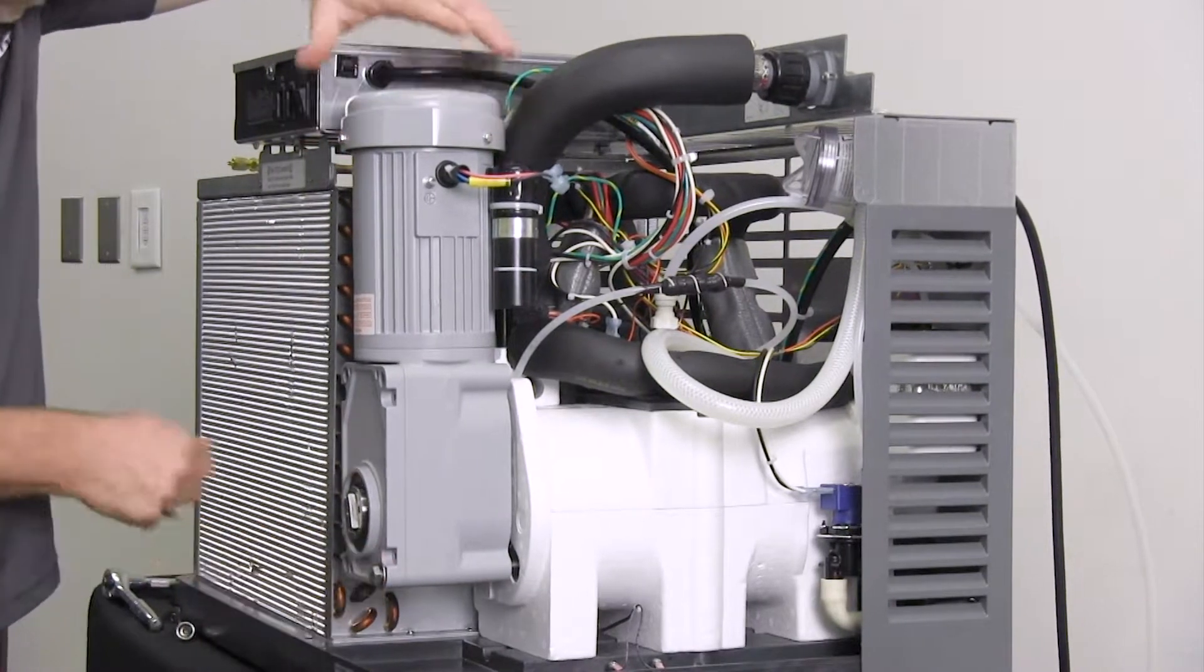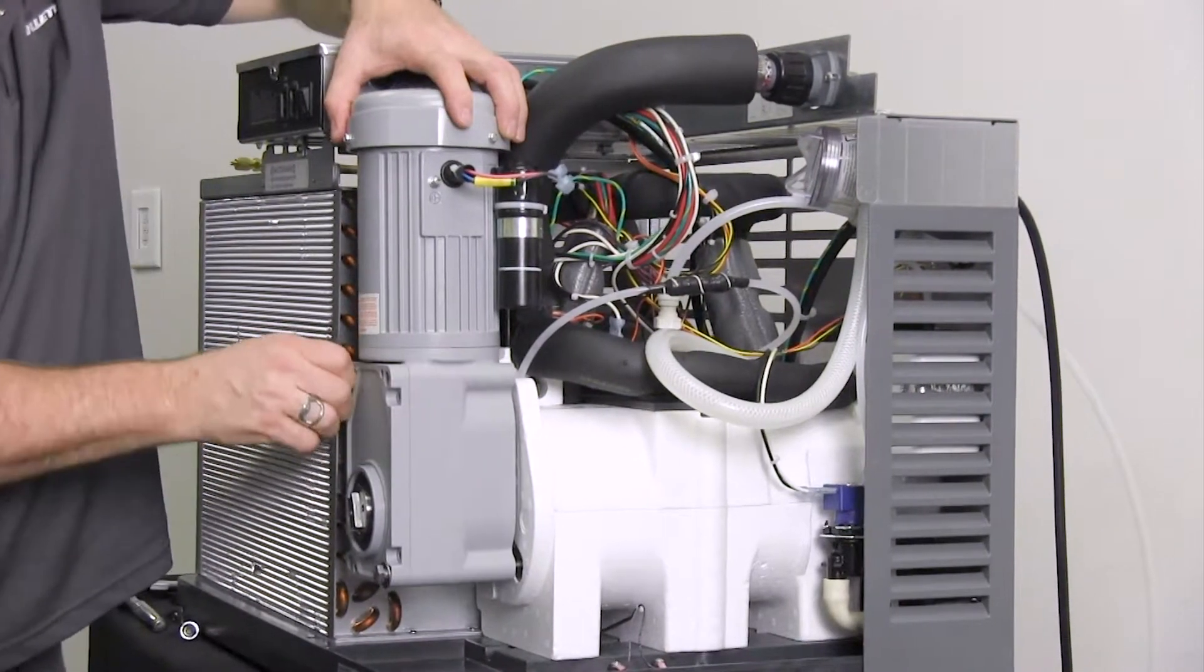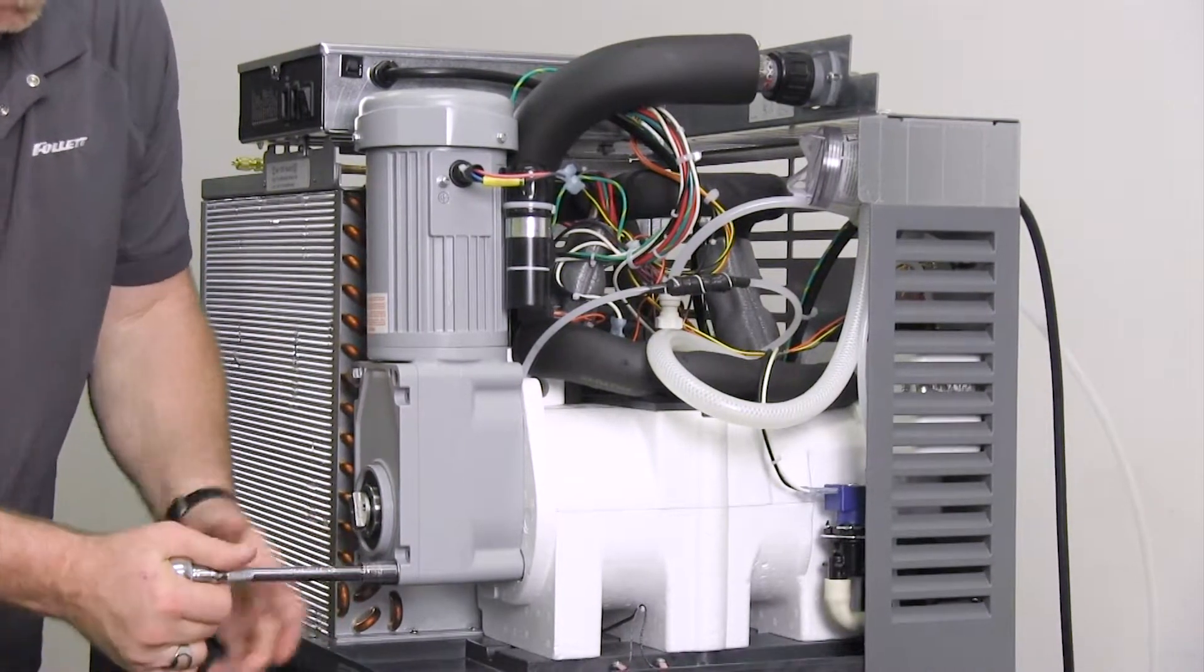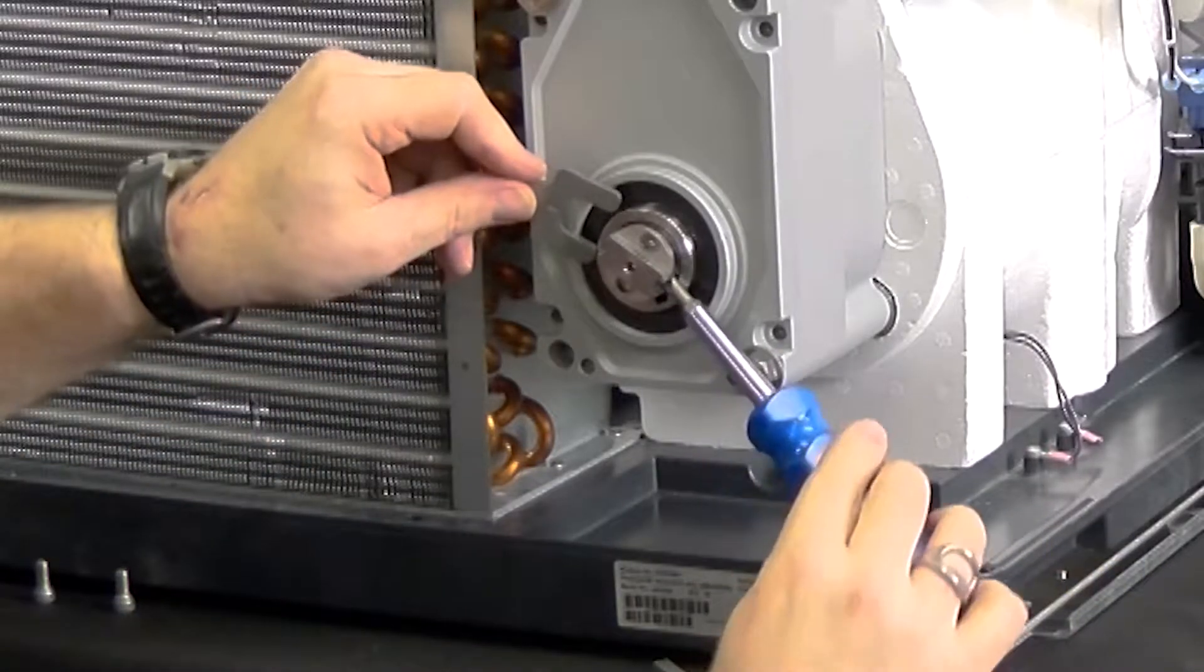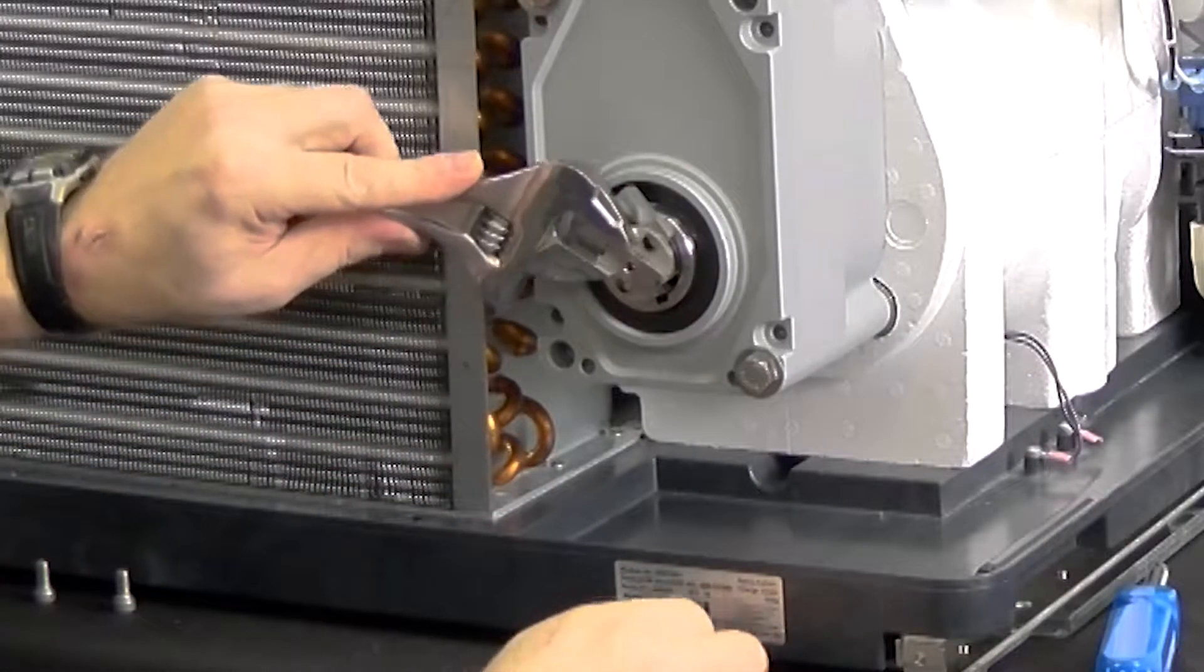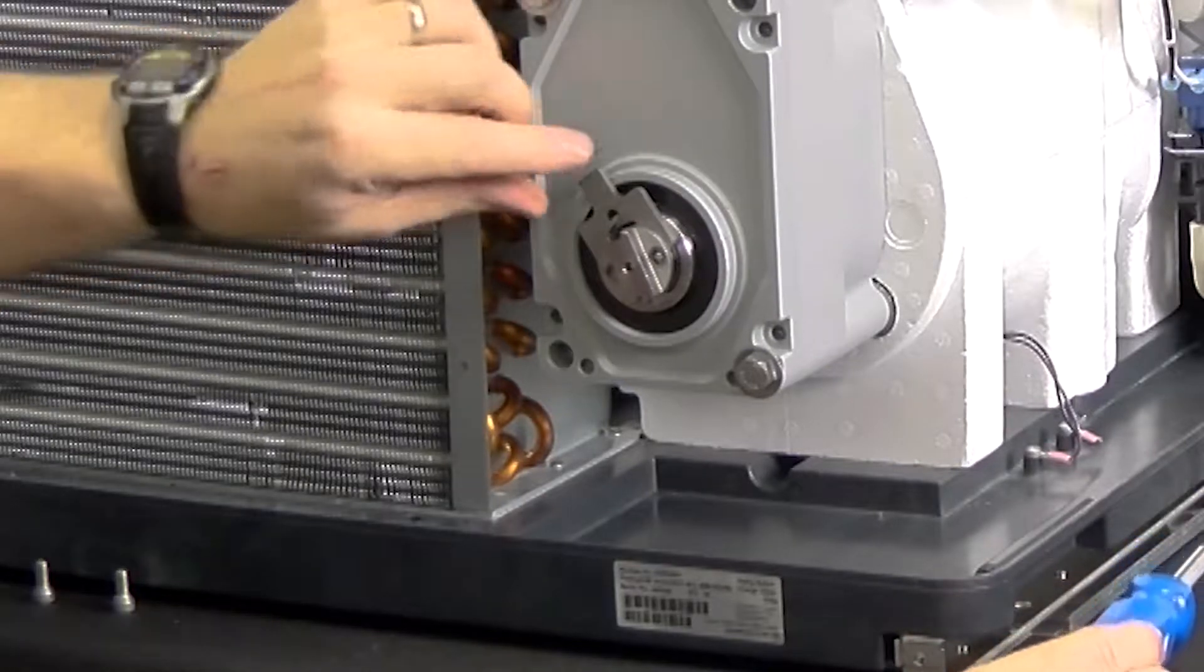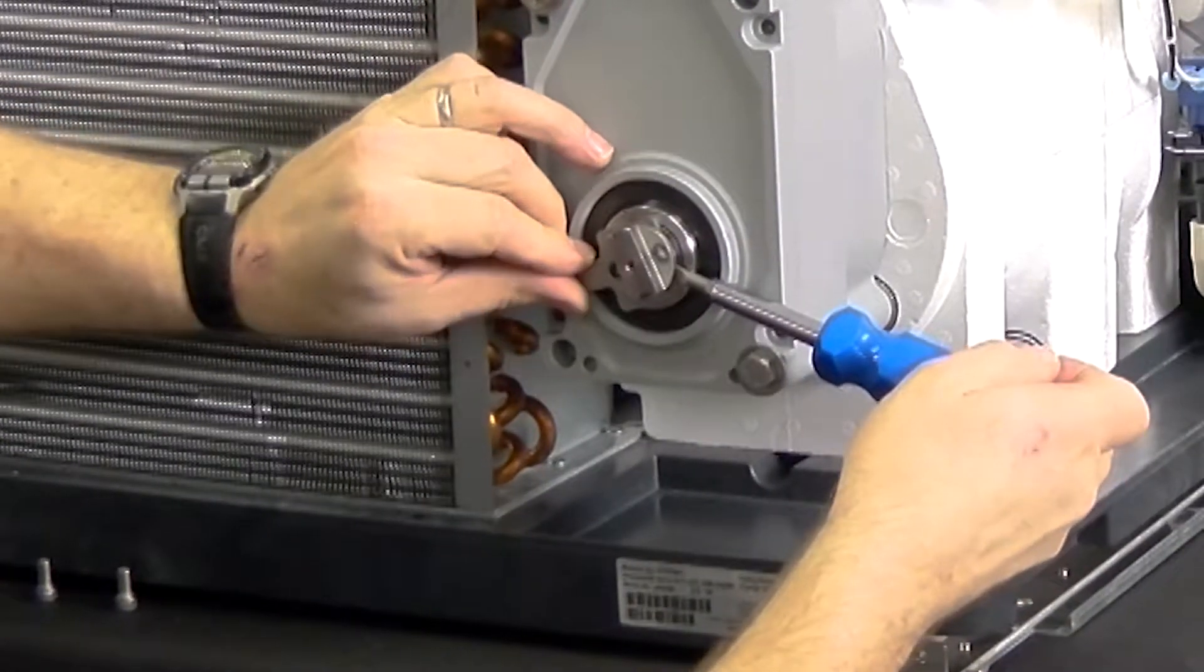Pry the auger forward with your screwdriver and rotate the auger using your half-inch wrench to align with the key entry point. Install the key and keep the auger pried to allow room for the retainer fork. Install the retainer fork and rotate it to align screw holes. Install screws to secure the retainer fork.